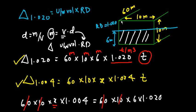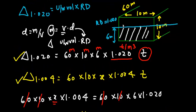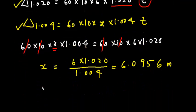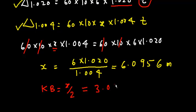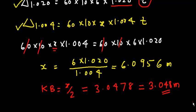So the new draft is approximately 6.0956 meters — slightly more than the original 6 meters. KB = draft ÷ 2 = 6.0956 ÷ 2 = 3.0478, which rounds to 3.048 meters. These two examples are about box-shaped vessels, which are easy to understand and help build the concept. More complicated problems will follow.